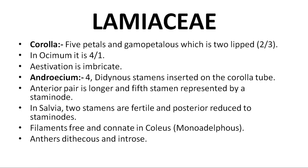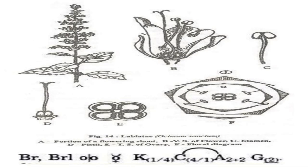Androecium includes 4 stamens, didynamous — arranged 2+2 — inserted on the corolla tube. The anterior pair is longer; the 5th stamen is represented by a staminode. In Salvia, only two stamens are present; the posterior pair is reduced to staminodes. Filaments are free; in Coleus they are connate (monadelphous condition). Anthers are dithecous and introrse — they dehisce towards the inside.